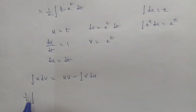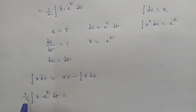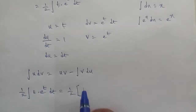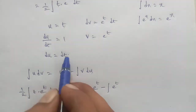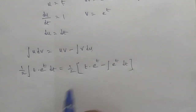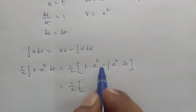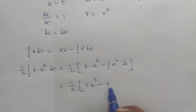Applying the formula with the constant 1 by 2 outside: 1 by 2 times u into v, which is t into e to the power t, minus the integral of v du, which is e to the power t times dt. Integrating, the integral of e to the power t is e to the power t. So we get 1 by 2 times t into e to the power t minus e to the power t, plus constant c.